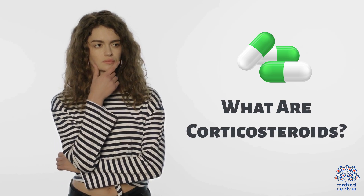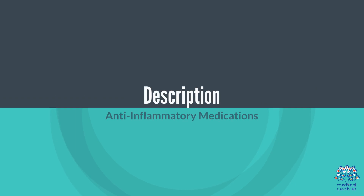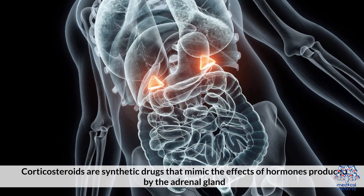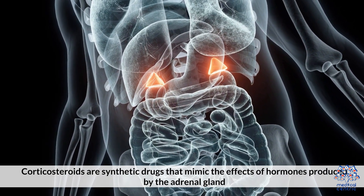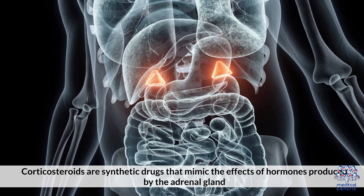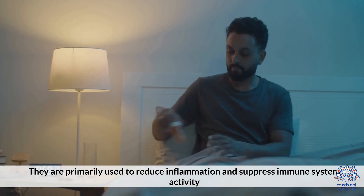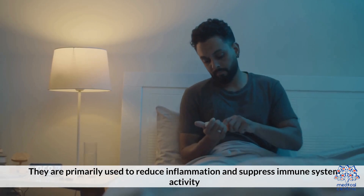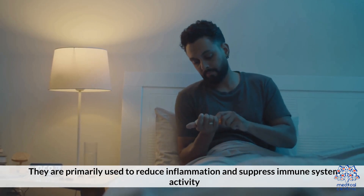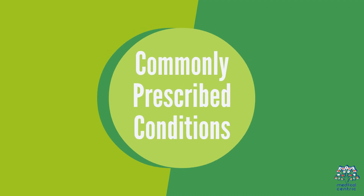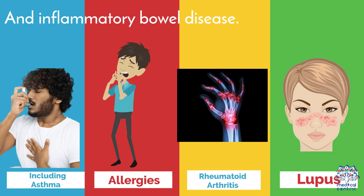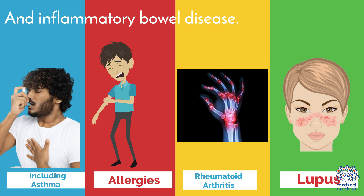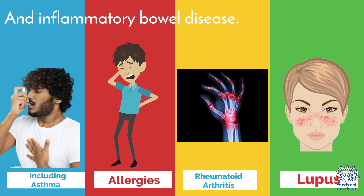What are corticosteroids? Corticosteroids are synthetic drugs that mimic the effects of hormones produced by the adrenal glands. They are primarily used to reduce inflammation and suppress immune system activity. Commonly prescribed conditions include asthma, allergies, rheumatoid arthritis, lupus, and inflammatory bowel disease.